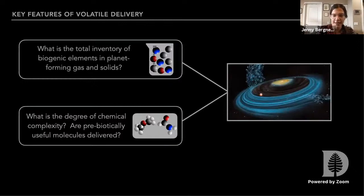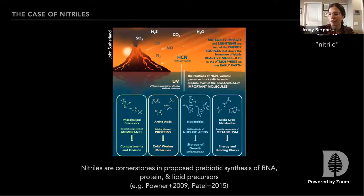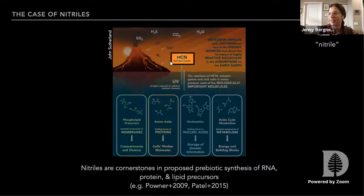One of the most prebiotically interesting classes of molecules is nitriles. A nitrile is a molecule with a carbon-nitrogen triple bond, also sometimes called a cyanide. We're especially interested in this chemical family because in a number of plausible prebiotic chemical schemes, nitriles sit at the center of chemical syntheses of RNA, protein, and lipid precursors — with hydrogen cyanide right at the center of this synthesis. Studying how this group is distributed in planet-forming disks can tell us whether this plausible prebiotic building block is commonly delivered to young planets.